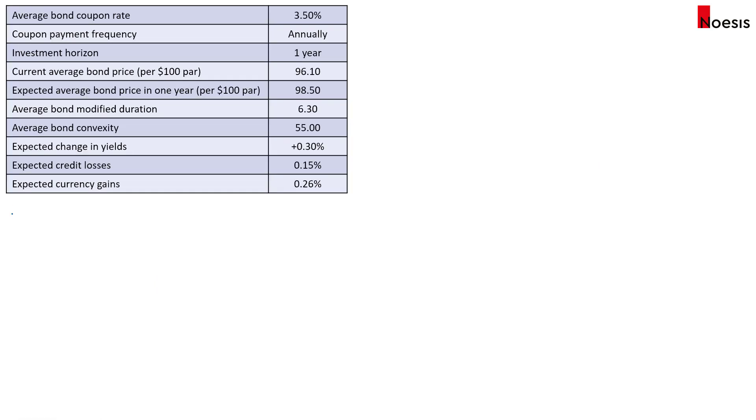So to calculate the expected return, there are five components that we will have to calculate. There is the yield income from the coupons and also the reinvestment income. Then we add in the roll down return. This is the change in the bond price, assuming that there is no change in the yield curve.